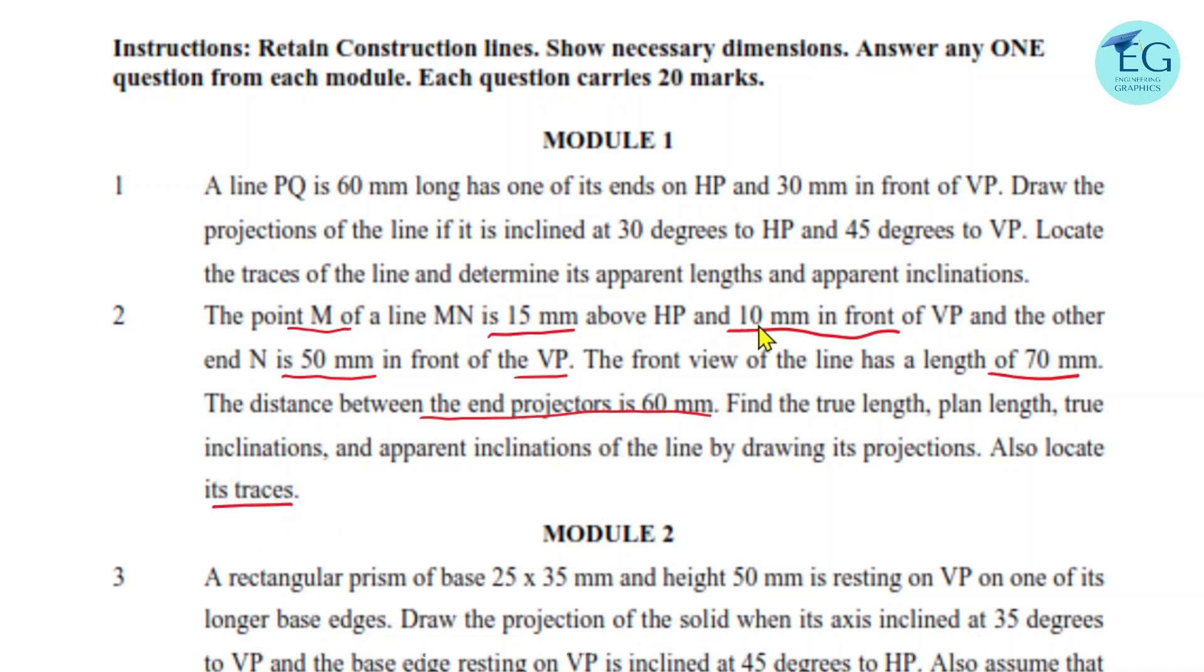Point M's position with respect to HP and VP, other end N's position with respect to VP, line end front view of the distance between end projectors is complete. Line deposition is completed and trace location.